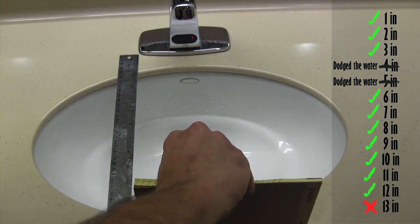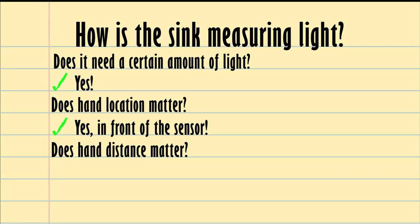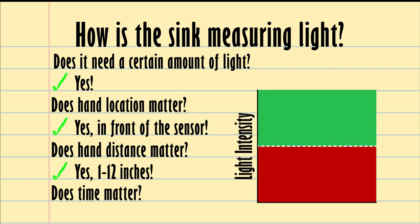Okay, now we know we want to bounce back as much infrared light as possible, but does time play a part? Going back to that graph from earlier, maybe there is a certain length of time that the sensor needs signal before it will turn on the water. That would mean if there's enough light but it's not there for long enough, no water. If there's too little light but it's there for a long enough period of time, still no water. Only when there's enough light and it's there for long enough, then the water turns on.